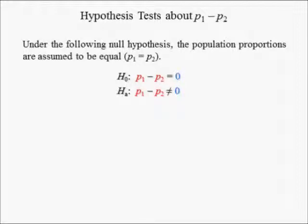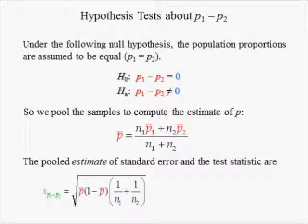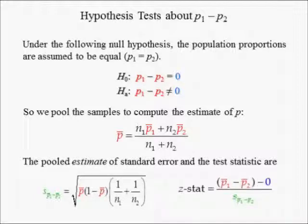When the test is two-tailed, the null hypothesis suggests that the population proportions are probably equal. So we pool the samples and compute an estimate of the population proportion, which p1 and p2 equal if the null hypothesis is true. Pooling the samples alters the standard error, but not the equation for the z-stat.